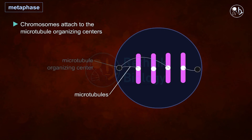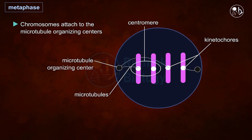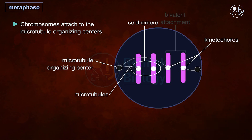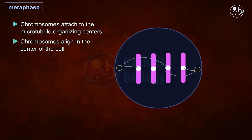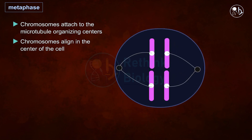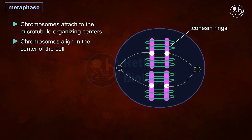In metaphase, microtubules arise from microtubule organizing centers present at each pole of the cell and attach to the kinetochore of the centromere of each linked sister chromatid pair, connecting each to the opposite pole. This is called bivalent attachment. Due to this bivalent attachment, each daughter cell gets the exact same number of chromosomes. The microtubules begin pulling the sister chromatids toward each pole, but due to the presence of cohesion rings, chromosomes are aligned in the middle — the equatorial region of the cell.